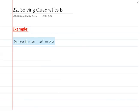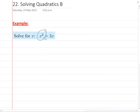In this example we've got a quadratic because we've got x squared. But the reason why it's a little bit different to before is it's not equal to 0 on one side.